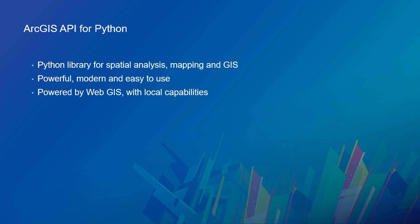The first thing we're going to talk about is what is the ArcGIS API for Python. It's a library — a collection of tools and classes that you can use to work with your web GIS. It's very powerful, follows modern practices, and we designed it to be easy to use. It's powered by your web GIS but also has local capabilities, including the ability to use ArcPy for some functions on the back end, like a geometry engine. You can also take advantage of geoanalytics and regular analysis, like interpolation on a web map.